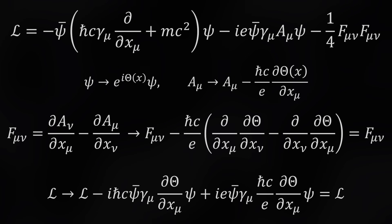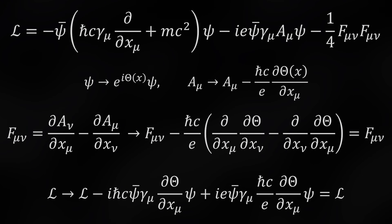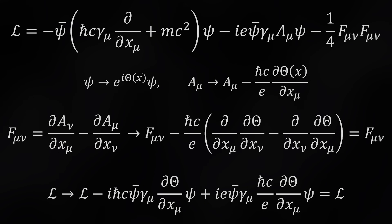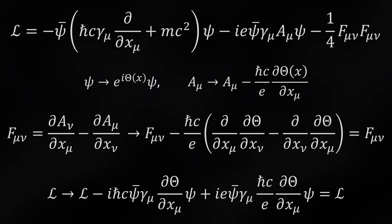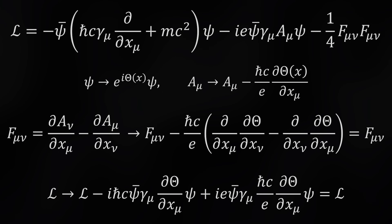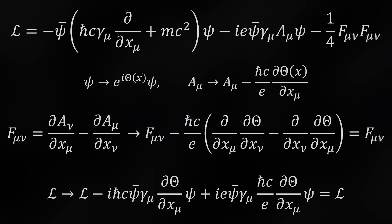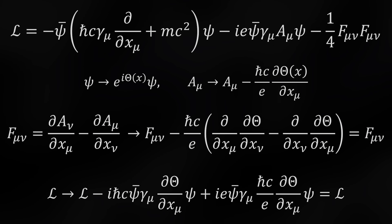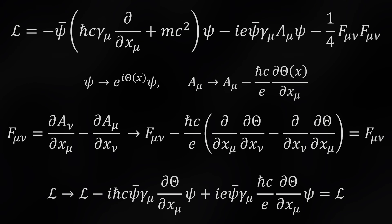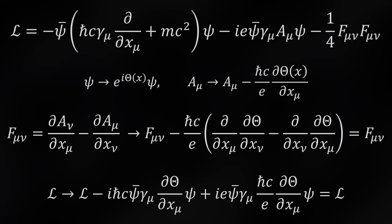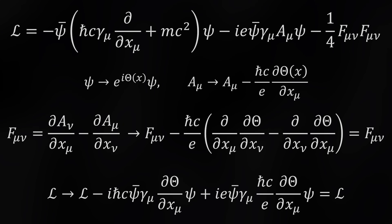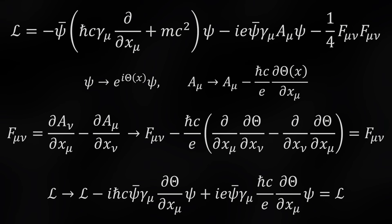I'll end on a cliffhanger: one of the most beautiful ideas in physics is that in quantum electrodynamics, a local U(1) symmetry of the wave function implies electromagnetism. This will take a full video to unpack — probably about an hour — but briefly: in QED you have a wave function (actually four in one), and if you impose that you can freely rotate it in phase space, you find that keeping the Lagrangian density invariant requires the gauge symmetry of the electromagnetic four-potential.